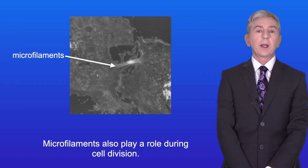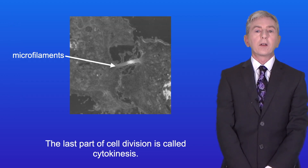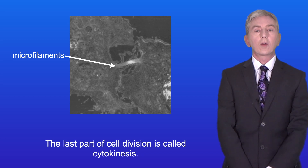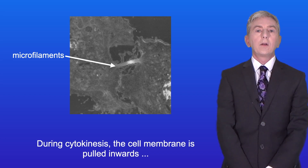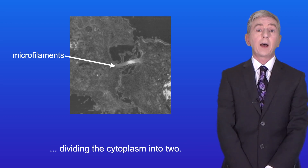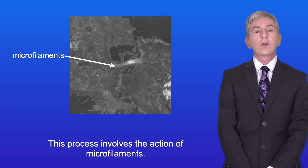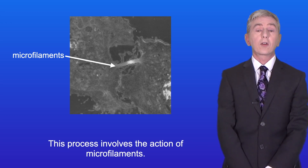Microfilaments also play a role during cell division. The last part of cell division is called cytokinesis. During cytokinesis the cell membrane is pulled inwards, dividing the cytoplasm into two, and this process involves the action of microfilaments.